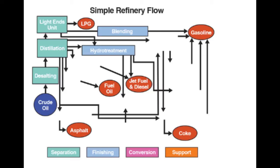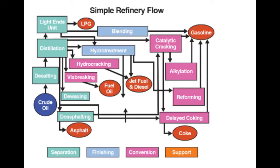Without any conversion process, we bring in two additional separation processes — de-waxing and de-asphalting. De-waxing produces the lubricating oil base stock and wax as a byproduct. De-asphalting treats the vacuum distillation resid to separate out asphalt and produce a de-asphalted oil for further conversion. We have now exhausted our separation processes, but there are still quite a few arrows pointing nowhere, so we need to move to our conversion processes, shown here in purple.